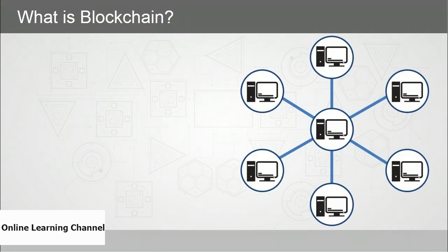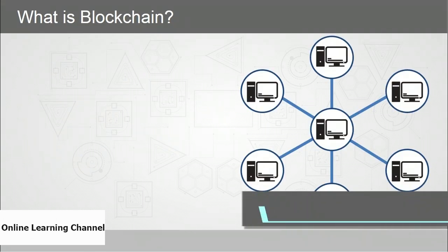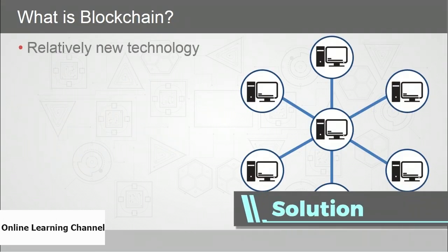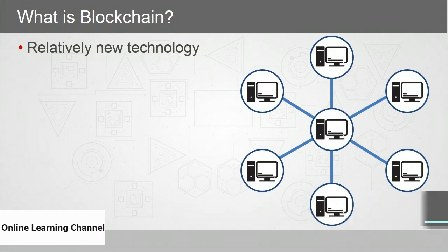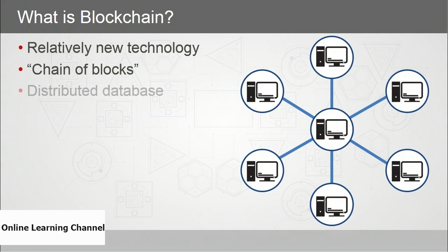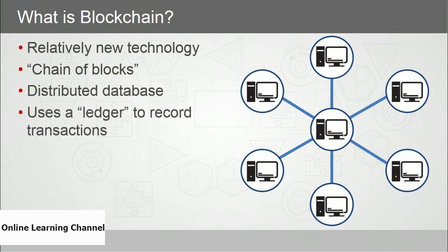Explaining what blockchain is: it's a relatively new technology, only around since 2009. It's a chain of blocks — a distributed database that uses a ledger to record transactions. It's very secure and immutable.